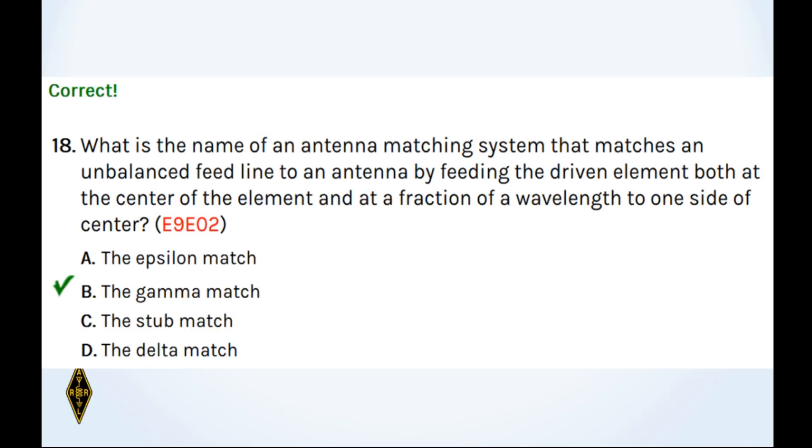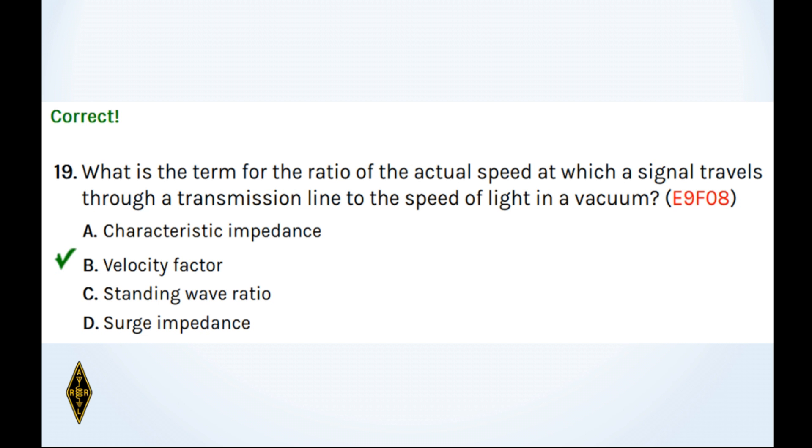And 18, what is the name of an antenna matching system that matches an unbalanced feed line to an antenna by feeding the driven element both at the center of the element, that's where the shield of a coax could go, and at a fraction of a wavelength to one side of the center? So that's a gamma match. And 19, what is the term for the ratio of the actual speed at which a signal travels through a transmission line to the speed of light in a vacuum? That's the velocity factor of the cable. Polyethylene is going to have a 0.66, that's the solid stuff, where foam might be up like 0.8. And open wire feed lines are 0.9 and above, so velocity factor.